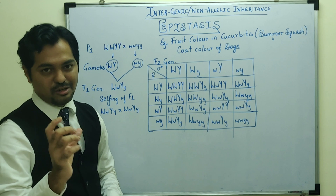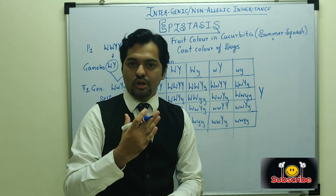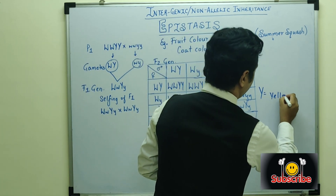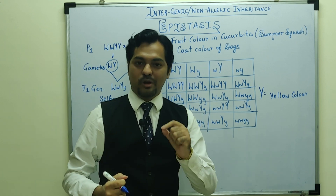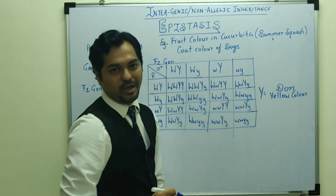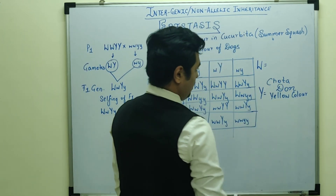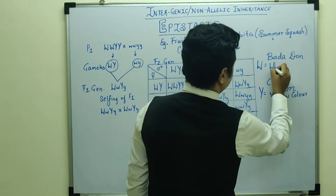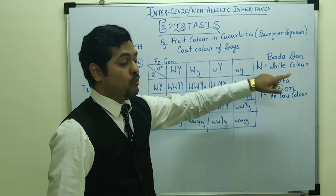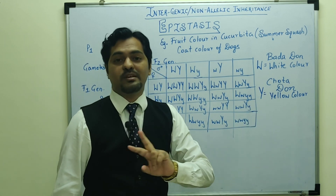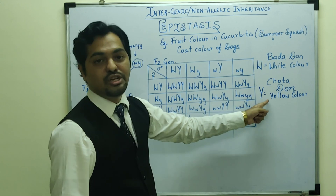Here you can understand the trick. Capital Y is the dominant gene — it will express itself and produce the yellow colour of the fruit. Capital W is also a dominant gene — we call it the 'big Don' — and it produces white colour. Now, capital Y is also a dominant gene, but when the big Don W is present, white colour is expressed. This means one dominant gene stops the expression of the other dominant gene.